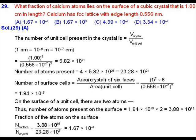Next, we find the number of atoms present in these unit cells. Since one unit cell of an FCC lattice contains 4 atoms, the total number of atoms will be 4 multiplied by the number of unit cells, coming out to be 23.28 × 10²¹.